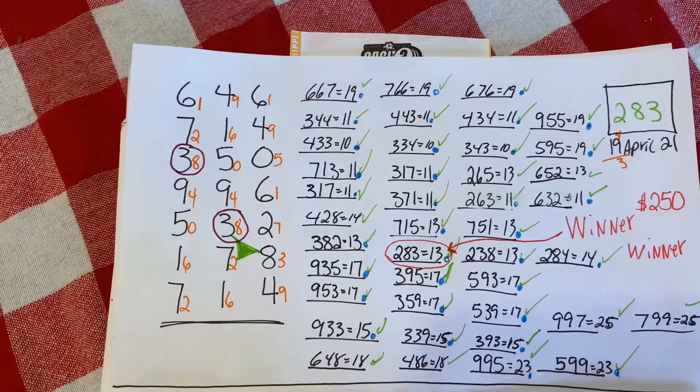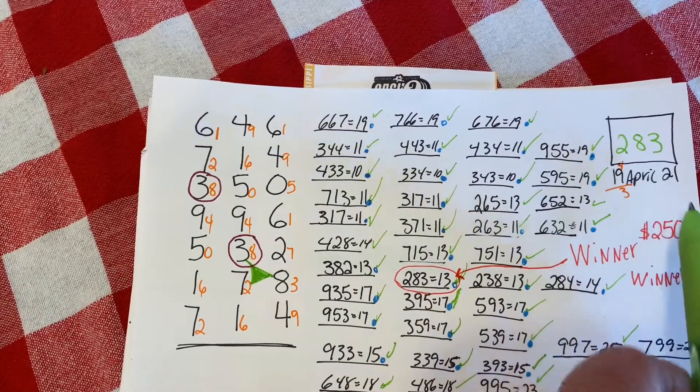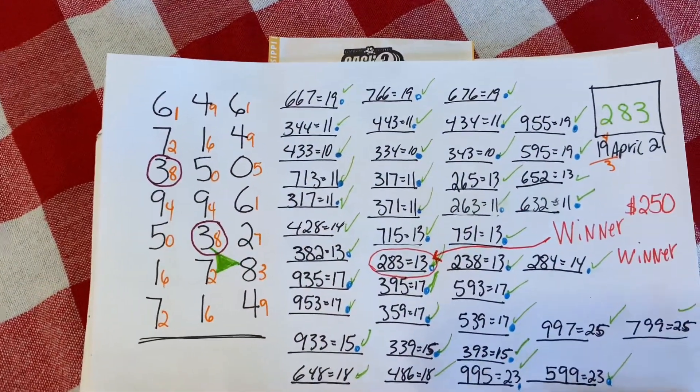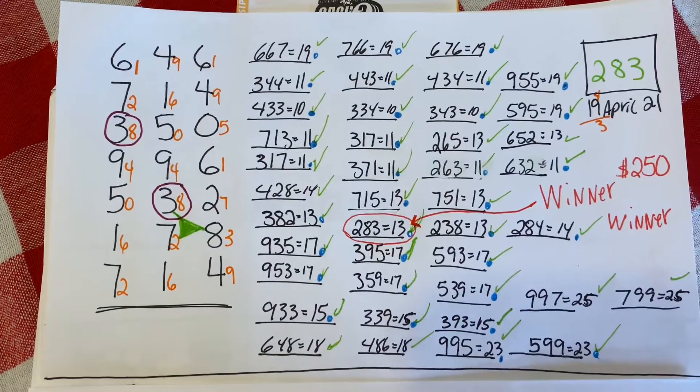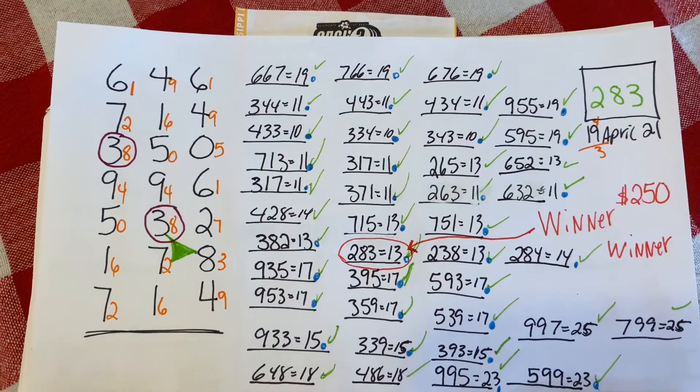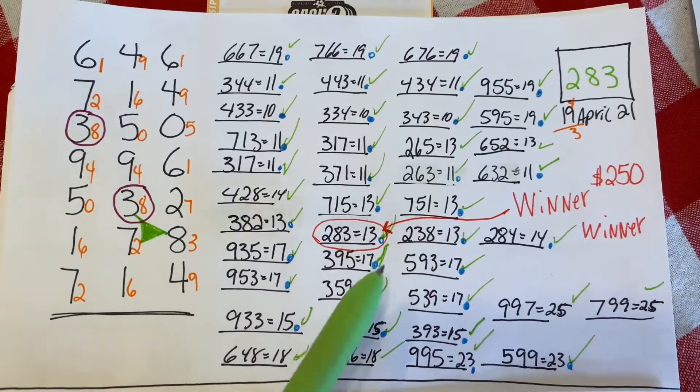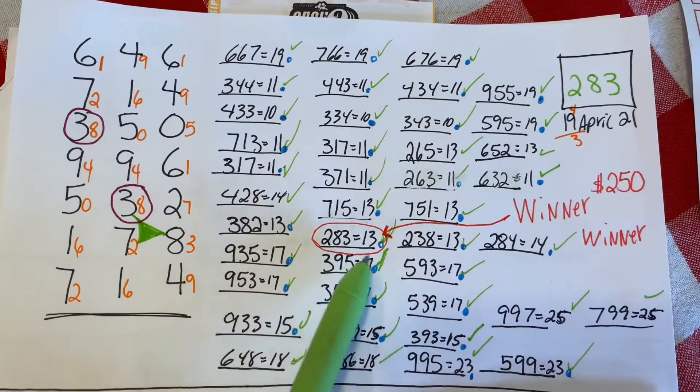If you look over to your right hand corner you will see the number 283. 283 is the winning number that was drawn, and if you will see in my video here I have the number 283 circled in red.